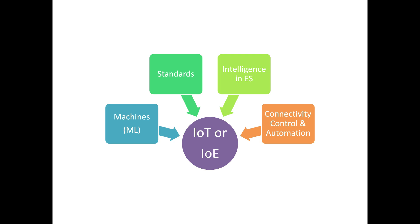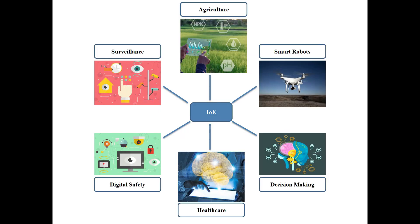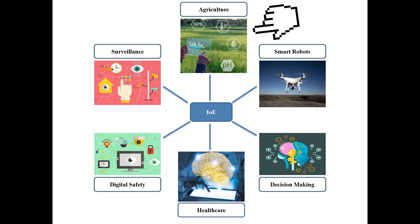The IoT term — Internet of Things — is today being replaced by IoE, which stands for Internet of Everything, because now not only systems but humans have also become an integral part of these systems. Since we have provided intelligence to the system as well, it is called Internet of Everything. Now we are going to discuss some real-life applications where IoT or IoE is used, starting from the basic agriculture point of view — there are smart irrigation, smart monitoring systems, and crop monitoring systems.